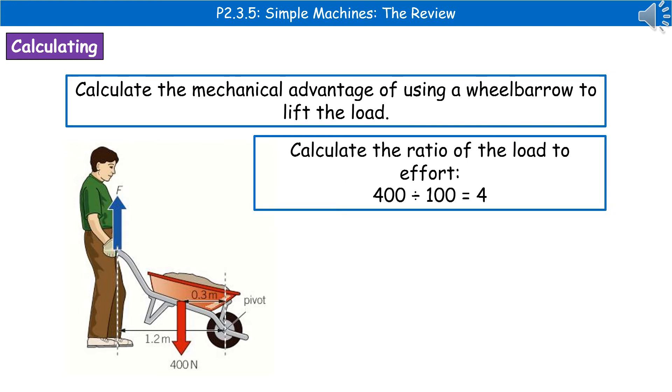The next thing to do is to calculate the ratio of the load to the effort. So we know that our load is 400. We know that our effort is 100. So 400 divided by 100 gives us an answer of 4.